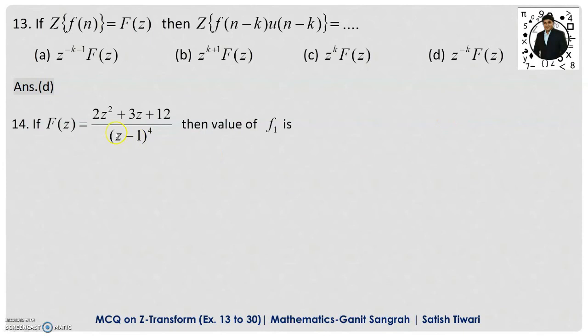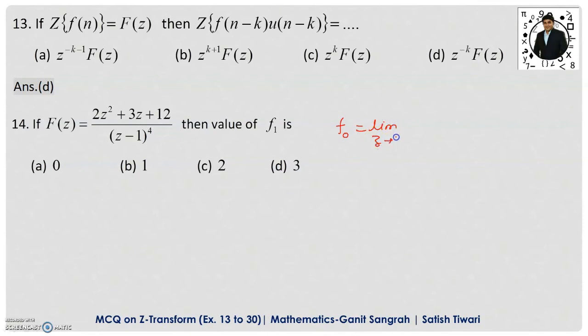Next, example 14. If F(z) equals (2z² + 3z + 12) / (z−1)⁴, then the value of f(1) is what? Here you are asked for a sequence term, that is f(1). We take sequence terms using the initial value theorem — that is f(0), f(1), f(2), f(3). By the initial value theorem, f(0) equals the limit as z tends to infinity of F(z).